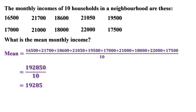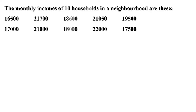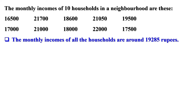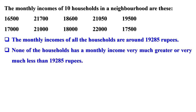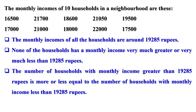Instead of taking all these incomes separately, if we had only the mean, we can still make some conclusions about the general economic status of the households. The monthly incomes of all the households are around 19,285 rupees. None of the households has a monthly income very much greater or less than 19,285 rupees. The number of households with income greater than 19,285 rupees is more or less equal to the number with income less than 19,285 rupees.